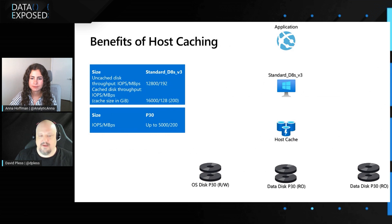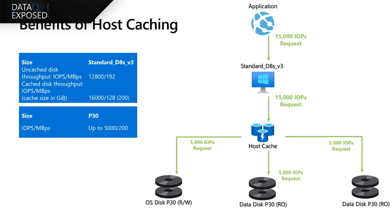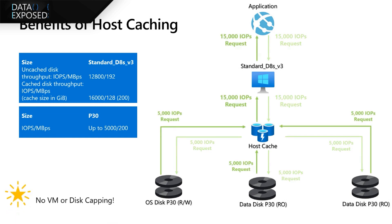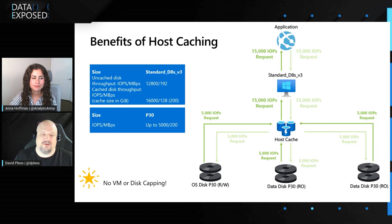Going back to the previous example, we're going to fix it with caching. We have the D8S V3 with 12,800 uncached IOPS, but this time with 16,000 cached IOPS as the virtual machine now has read only caching enabled. The application is requesting 15,000 IOPS, and the requests are broken down as 5,000 IOPS to each underlying remote disk. Because caching is enabled, we get the full 15,000 IOPS from the cache throughput and do not run into the limits of the uncached scenario. There's no capping at either level — disk or virtual machine.